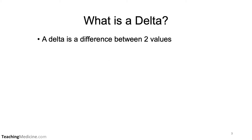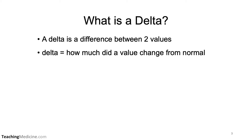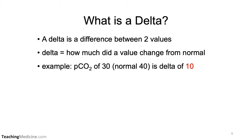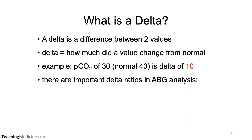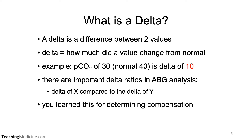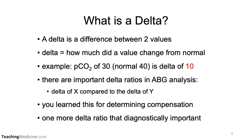A delta is the difference between two values, and usually it's how much a value changed compared to normal. For example, a pCO2 of 30, which has a normal value of 40, would represent a delta of 10. There are important delta ratios in arterial blood gas analysis — the delta of x compared to the delta of y — and we learned some of this when we were looking at compensation. There's one more delta ratio that is diagnostically important, and that's what we're going to look at now.